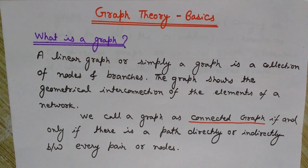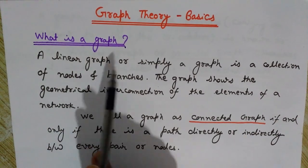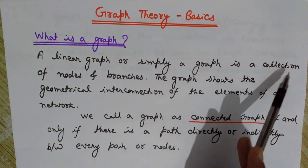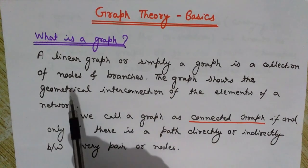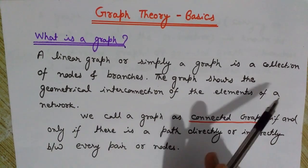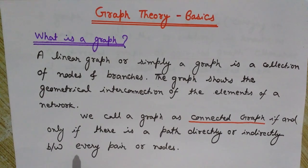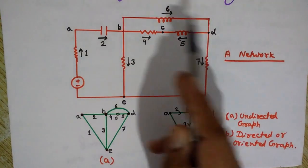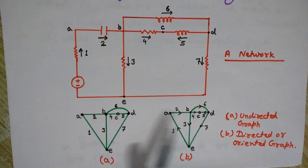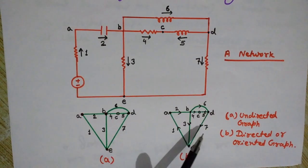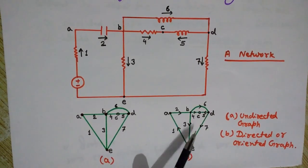Let's first understand the definition of a graph. A linear graph, or simply a graph, is a collection of nodes and branches. The graph shows the geometrical interconnection of the elements of a network. This is a network and these are the two graphs — this is the undirected graph and this one is the directed or oriented graph.